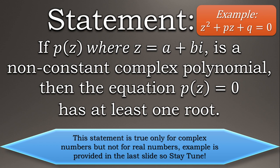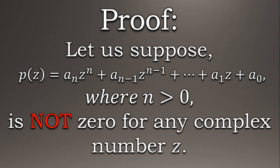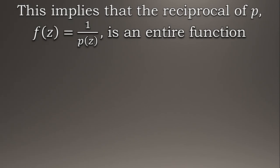And let's move on with the proof. So to start the proof, let's suppose a complex polynomial p(z) and also a contradiction that this polynomial is not zero for any complex number z.